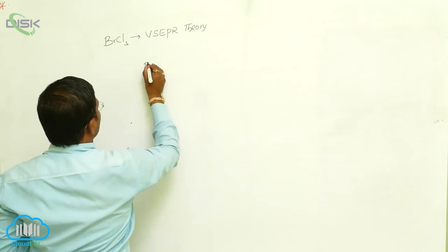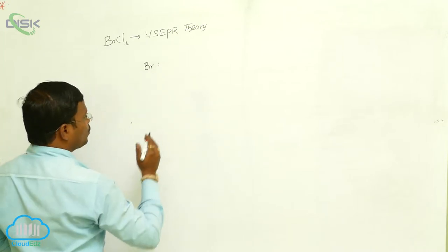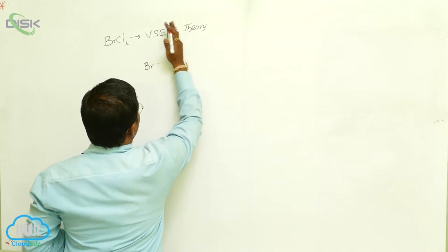For bromine trichloride, bromine in its ground state has 4s² 4p⁵ as the valency shell electron configuration.